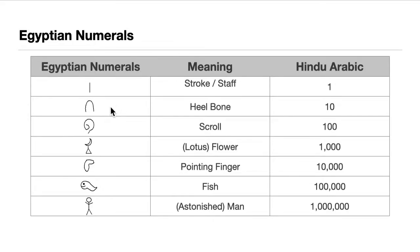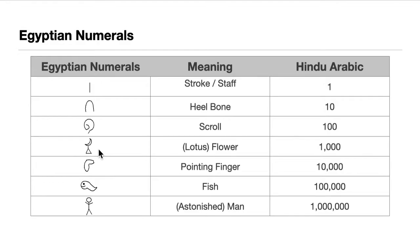Next we have the scroll, and its value is 100. Then we have the flower, also called the lotus flower in some books — it's drawn as a circle with petals — and its value is 1,000.